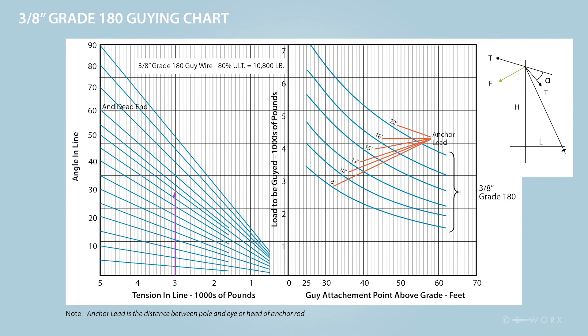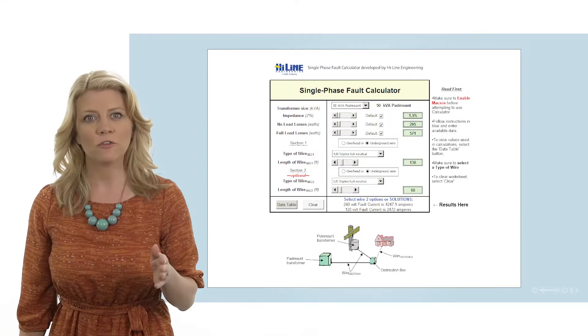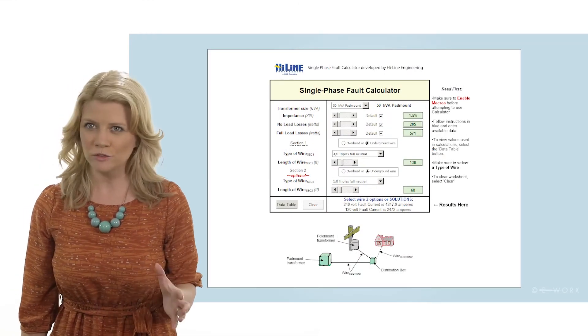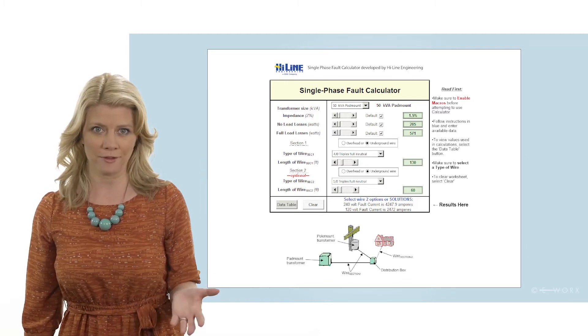You enter the tension on the x-axis and follow it up to where it intersects the line corresponding to the angle. The fault at the end of the service wire to the house, regardless of whether the transformer is overhead or pad mounted.